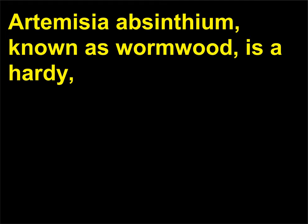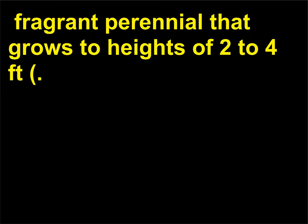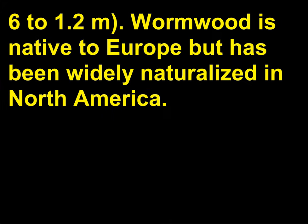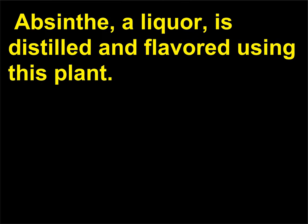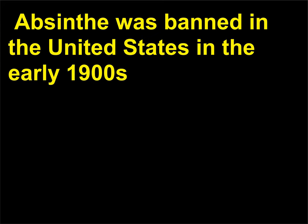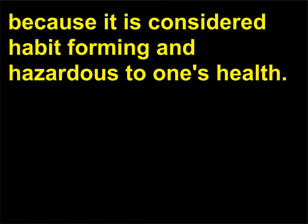What is wormwood? Artemisia absinthium, known as wormwood, is a hardy, fragrant perennial that grows to heights of 2 to 4 feet (0.6 to 1.2 m). Wormwood is native to Europe but has been widely naturalized in North America. Absinthe, a liquor, is distilled and flavored using this plant. Absinthe was banned in the United States in the early 1900s because it is considered habit-forming and hazardous to one's health.